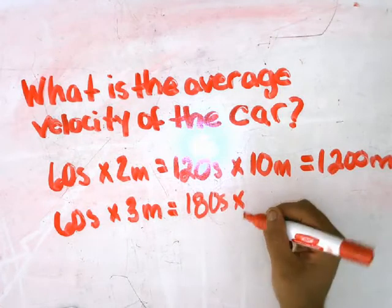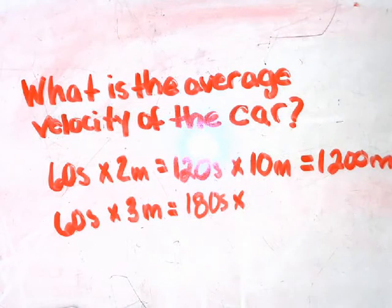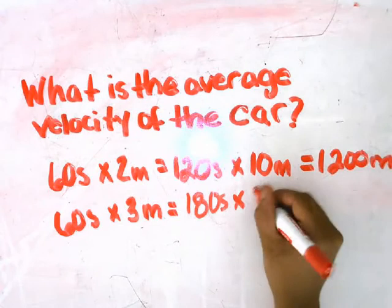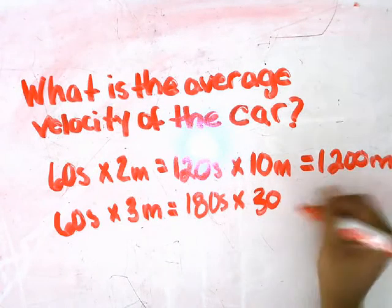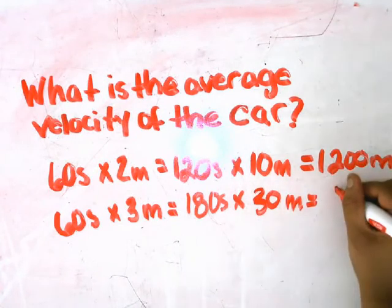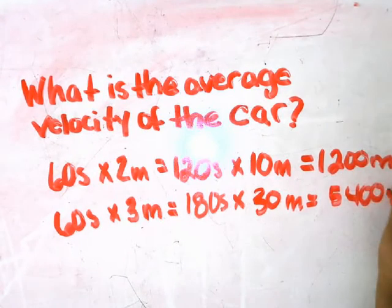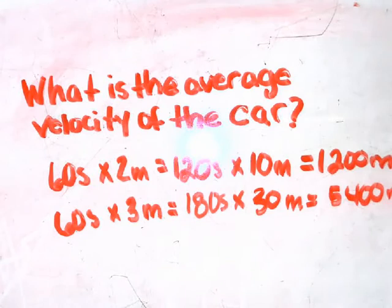Then you're going to multiply that by 30 meters per second, which is going to give you a total of 5,400 meters the car is traveling for 3 minutes.